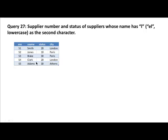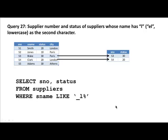Our answer is going to be Blake and Clark — those are the two suppliers whose names have L in the second position. The way to achieve this is by using the underscore wildcard character, which matches exactly one character. So: SELECT supplier number, status FROM suppliers WHERE supplier name LIKE underscore L percent. That means it has to have some character — unlike percent which matches zero or more, underscore matches exactly one character — followed by a lowercase l, followed by any number of other characters.